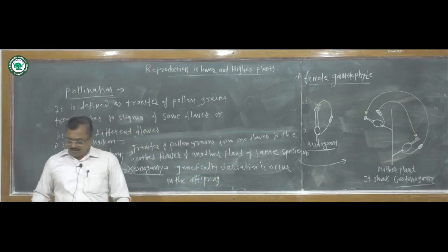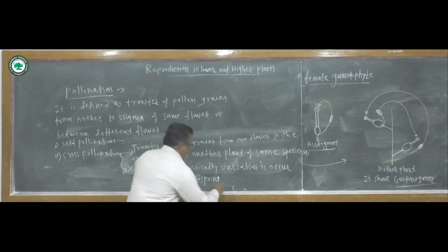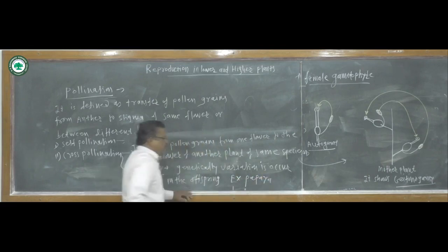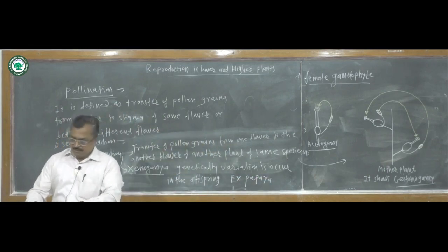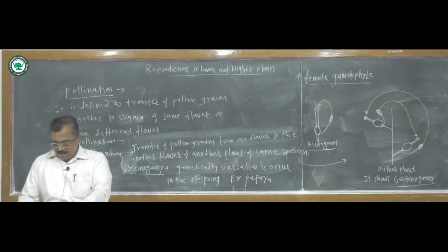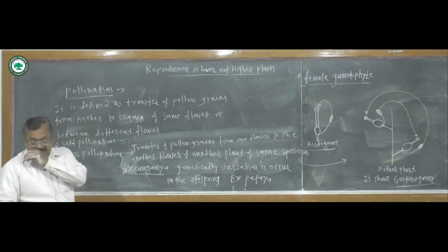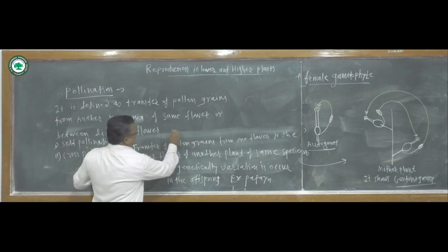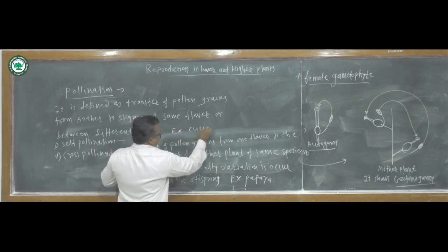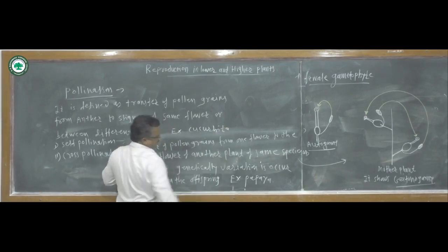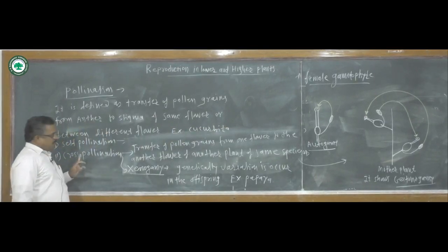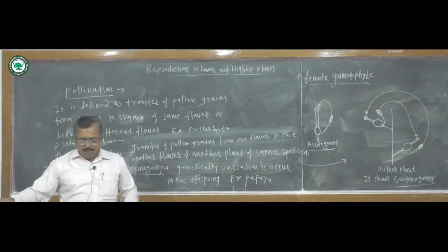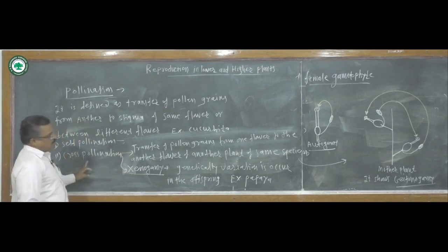For example, xenogamy type of cross pollination is found in papaya, and geitonogamy is found in Cucurbita — that is an example of self pollination. In this way, two types of pollination occur in plants: self pollination and cross pollination.